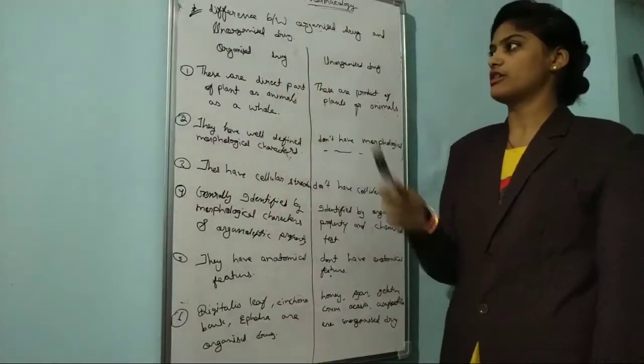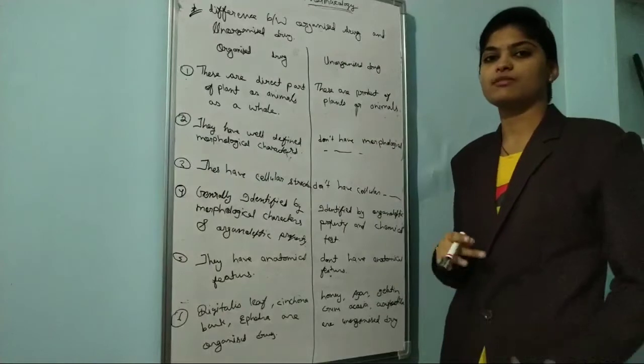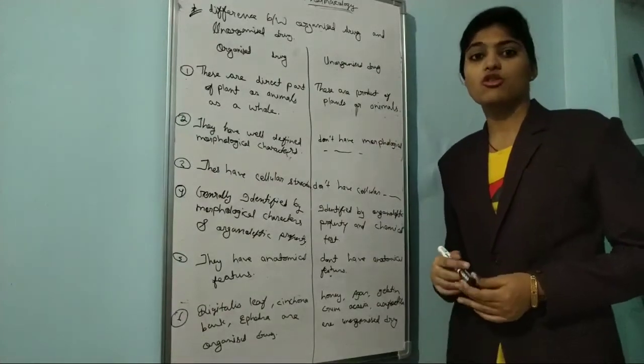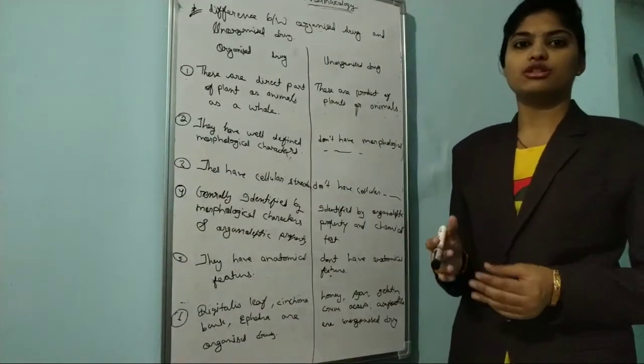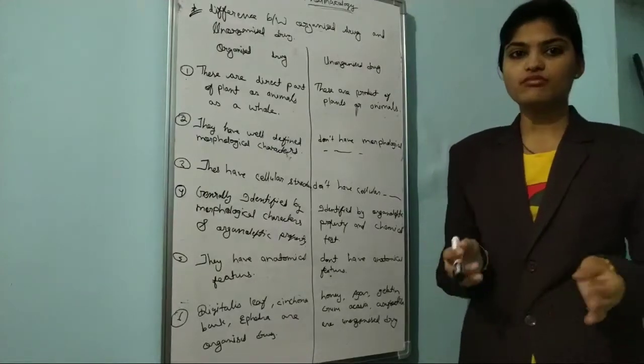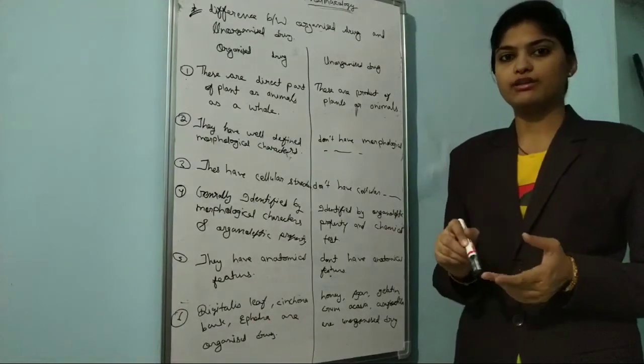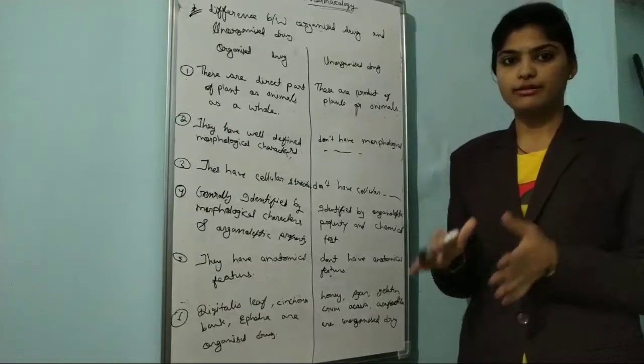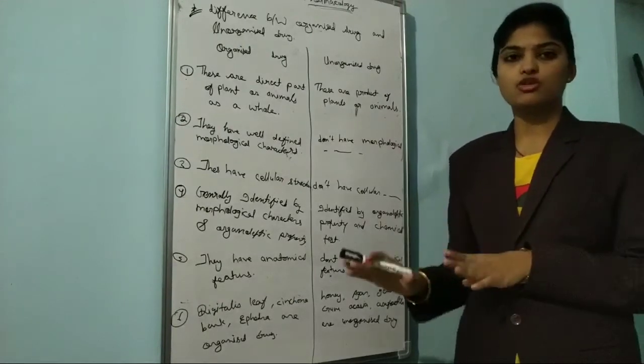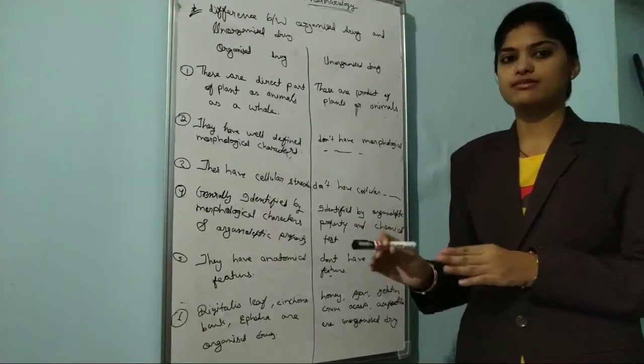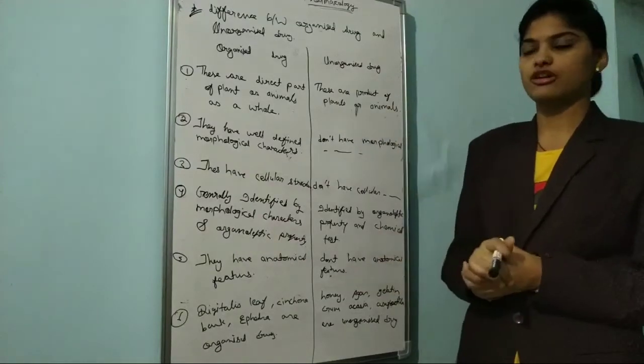First, let's understand what is organized drug. Organized drugs are drugs that we get directly from plants, animals, or minerals and we use them as they are. That is the organized drug.